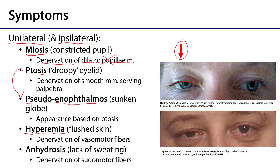Finally, unilateral anhydrosis, or a lack of sweating. Most structures innervated by the autonomic nervous system have dual antagonistic innervation, but sweat glands — or sudoriferous glands — are strictly innervated by sympathetic fibers. When these sympathetic fibers are denervated, there is a lack of sweating on the same side as the lesion. This is all unilateral.